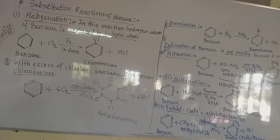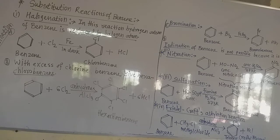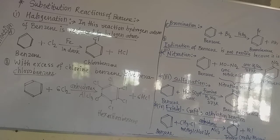In the addition of hydrogen, we obtain cyclohexane from benzene. In addition of chlorine, we obtain BHC — benzene hexachloride — which is an insecticide. And in addition of ozone, first we obtain the triozonide ring, then that breaks with zinc dust and water, and we obtain glyoxal. You saw that in the last lecture. Now let us come to the substitution reaction.